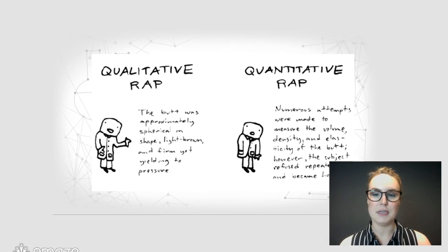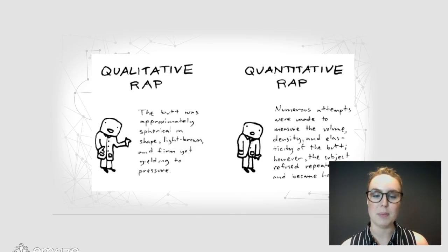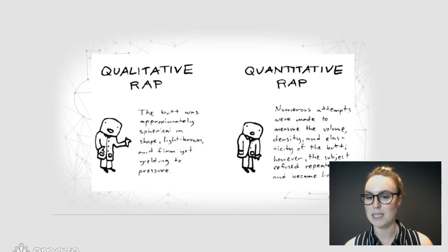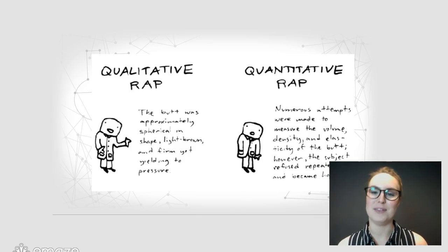Here's a fun image. On the left we have a qualitative rap — see if you can guess which song this is from. 'The butt was approximately spherical in shape, light brown and firm yet yielding to pressure.' That's the qualitative version. On the right, the quantitative rap: 'Numerous attempts were made to measure the volume, density, and elasticity of the butt. However, the subject refused repeatedly and became hostile.' You can see they're pulling apart the different ways you might measure this kind of situation.